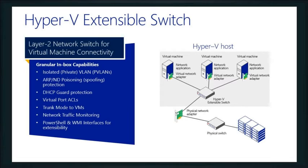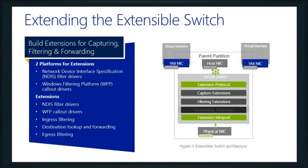We actually give you the ability to make a lot of settings — for example, DHCP guard protection on that NIC. If you're not familiar with DHCP guard, it's designed to help protect against man-in-the-middle attacks. If somebody has a rogue DHCP server sitting around intercepting requests, this prevents that. We can also do network traffic monitoring, and we can use PowerShell and WMI interfaces to do all kinds of things inside the switch.